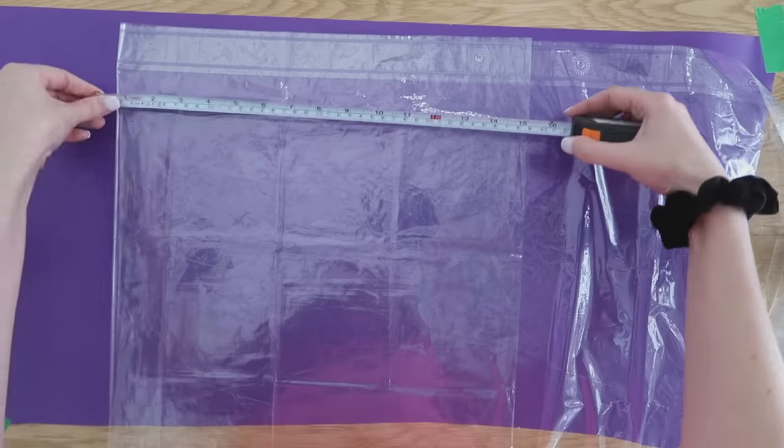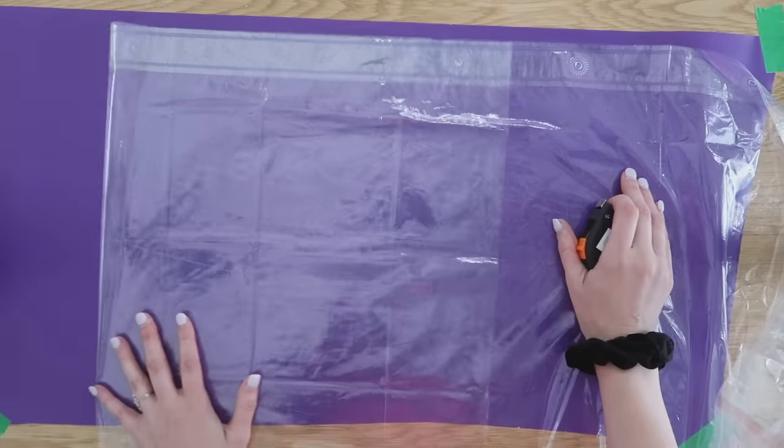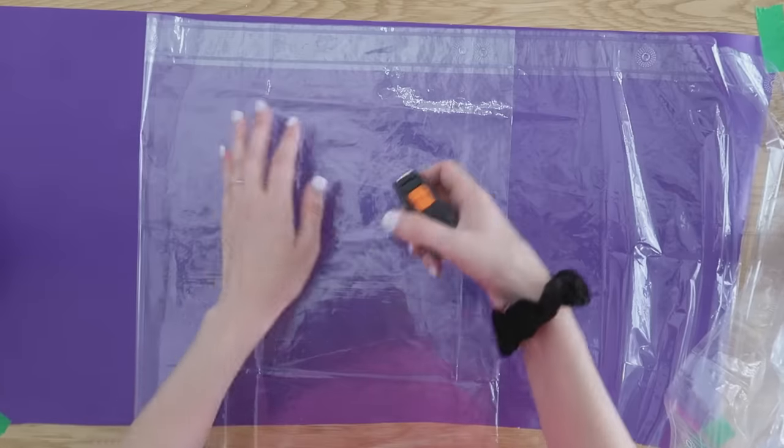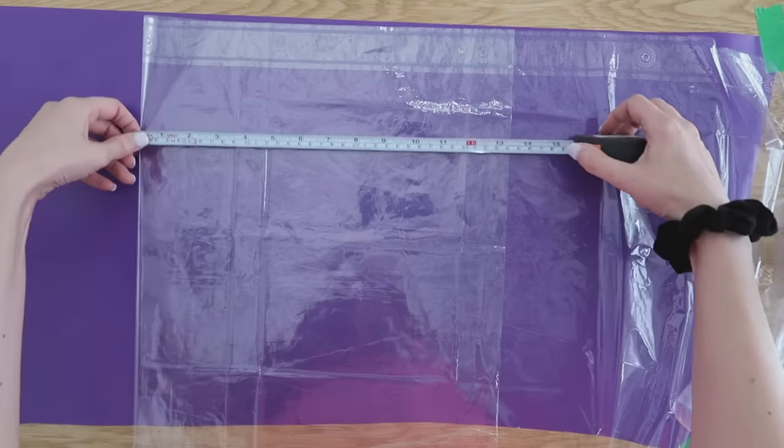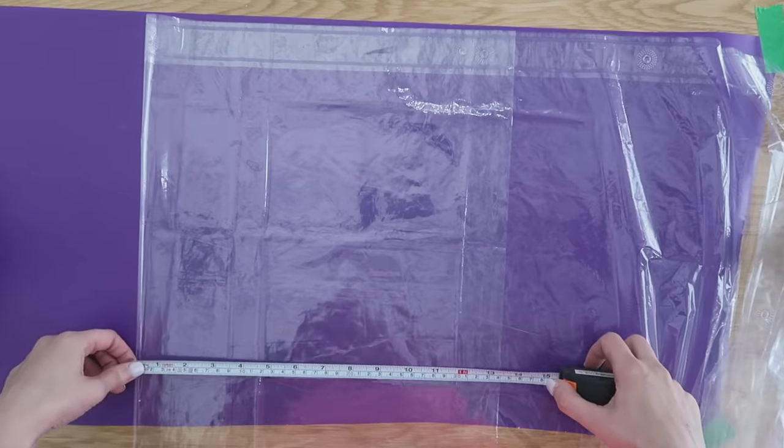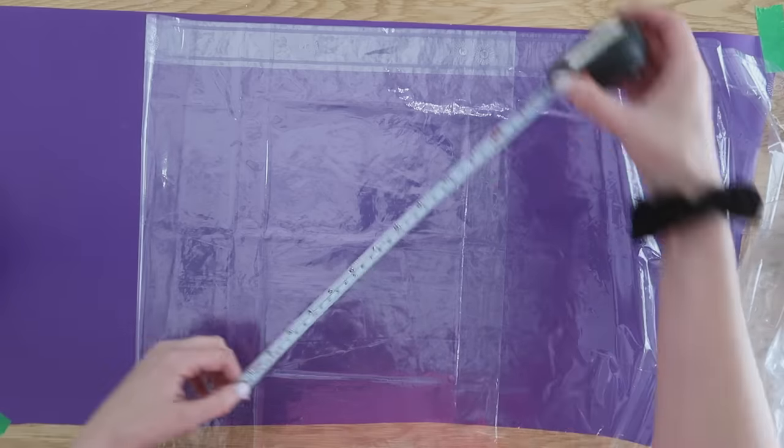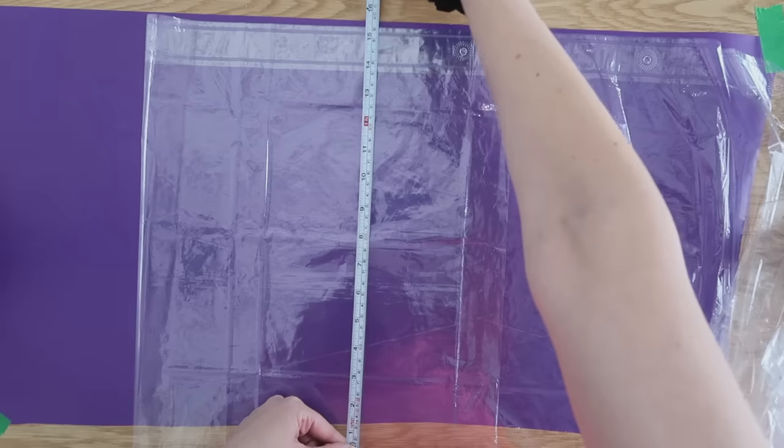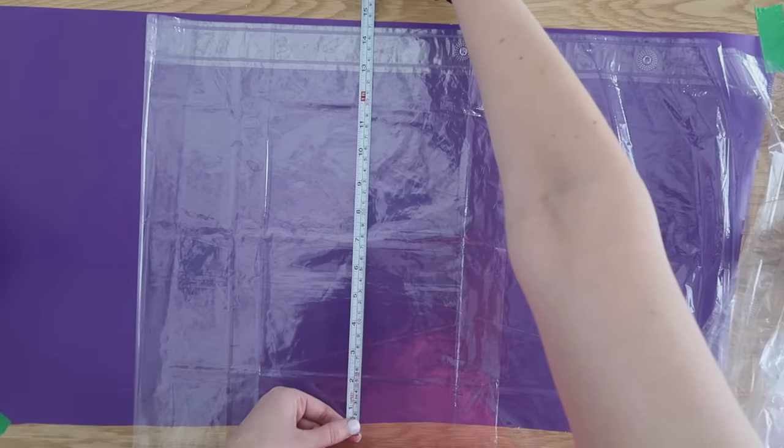I am laying out my shower curtain. You can see at the top, that is the top of the shower curtain which has a nice finished edge on it. And I'm just doubling it up and measuring over so that I have the width I need. And then I'm also going to measure up so that I have the height that I need.